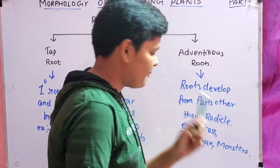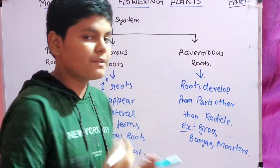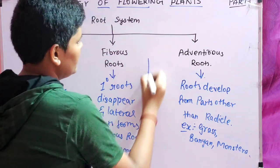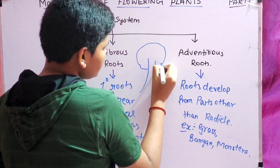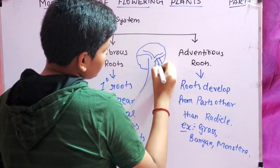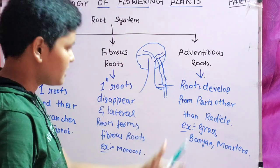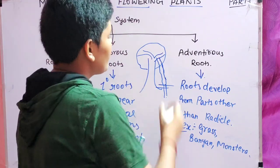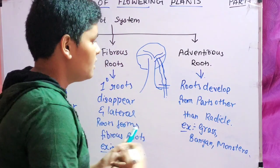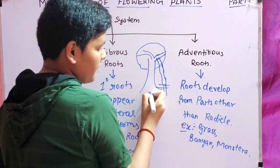Let us take an example of banyan or grass. In the banyan tree, the roots are not developing from the radicle — they originate from lateral stems, coming downwards and going into the soil. For grass, it is an example of a modification called runner. The stem runs along and at each node a new plant is formed, with roots developing from the nodes. These are not developed from the radicle, they are developed from the nodes between the stems, which is why they are adventitious roots.